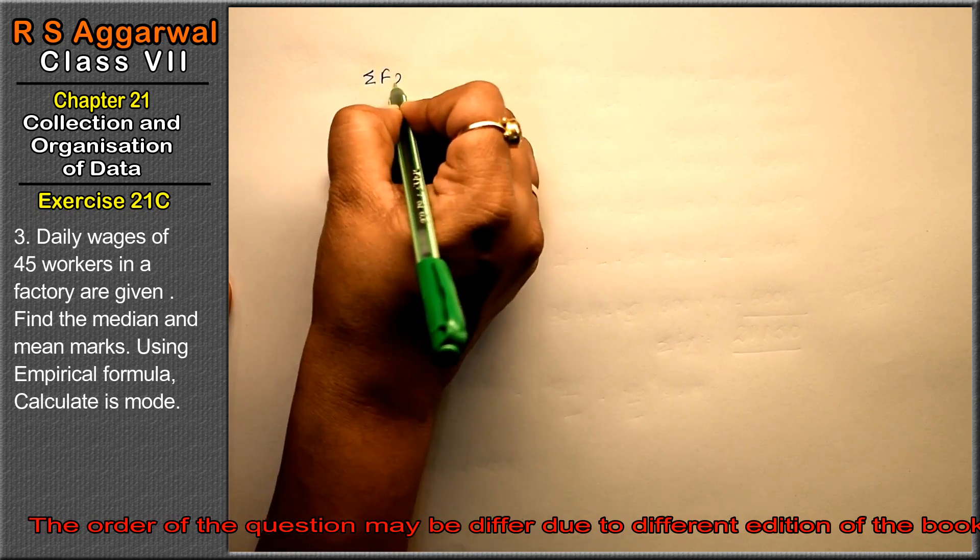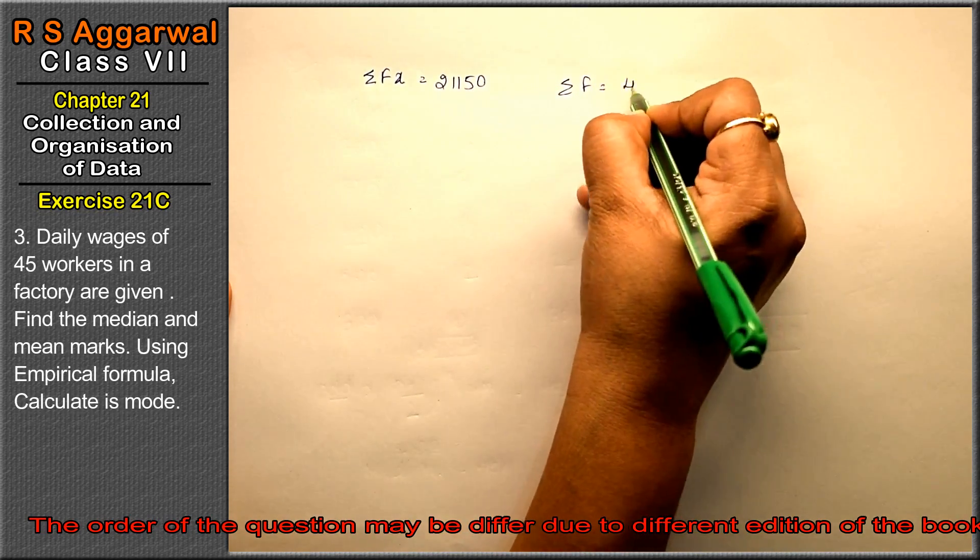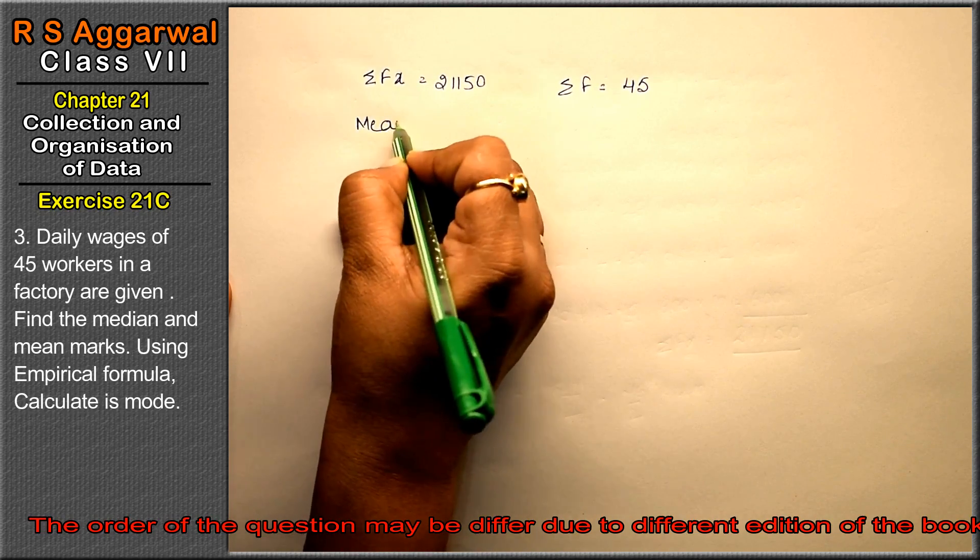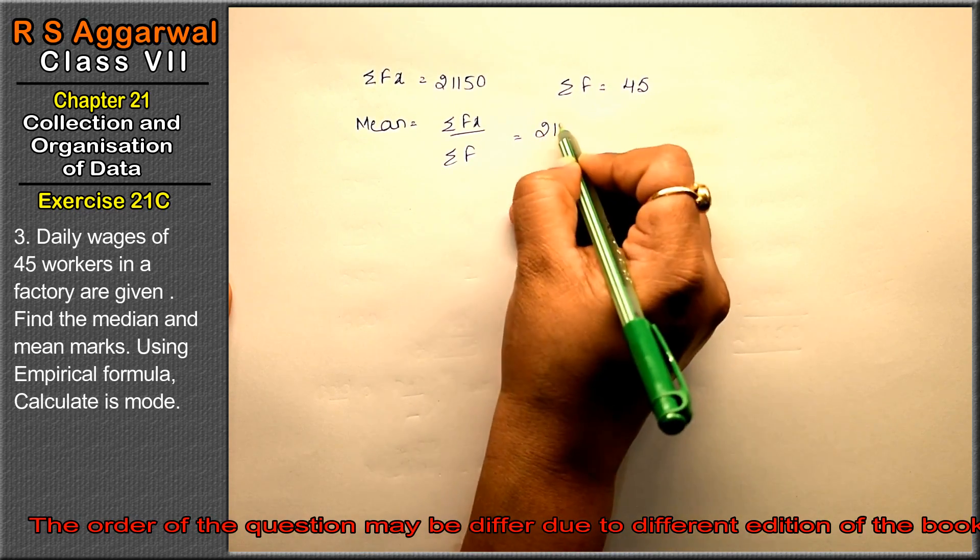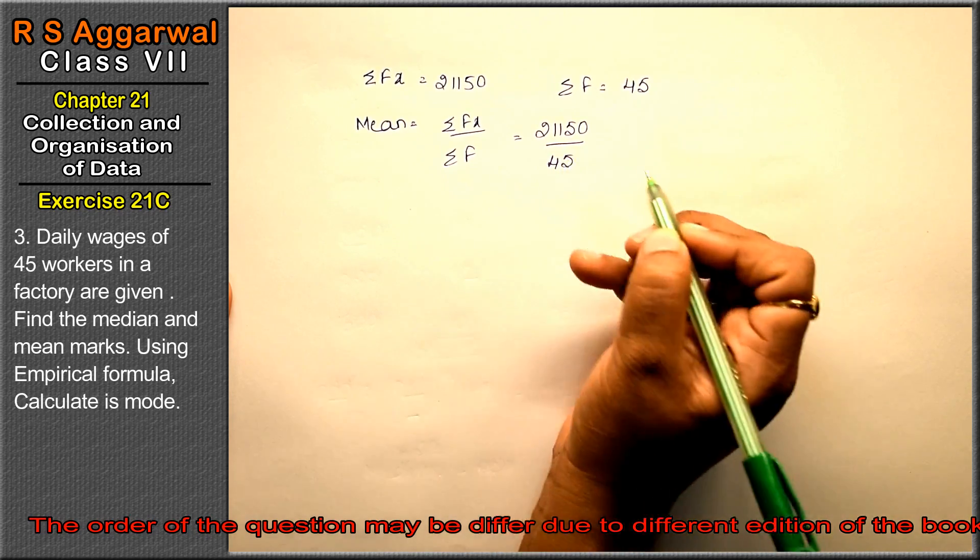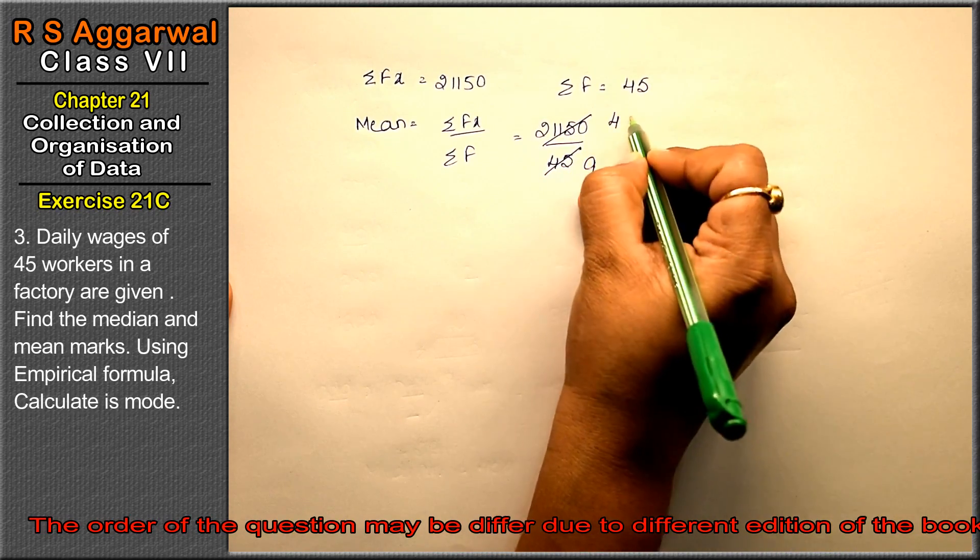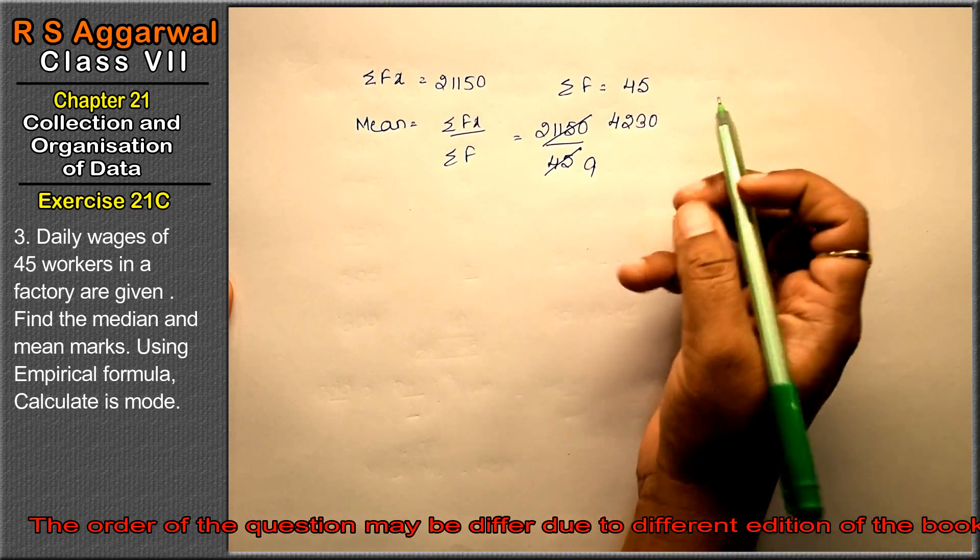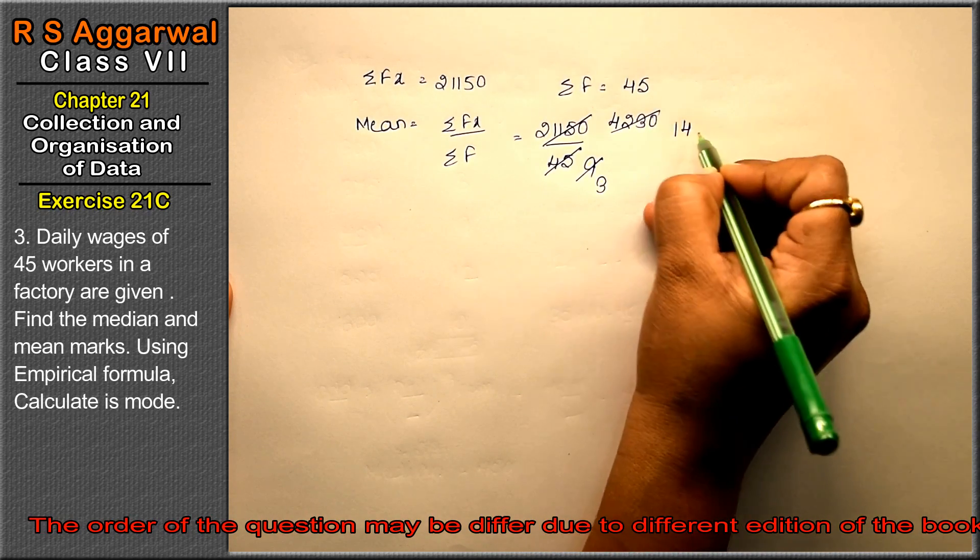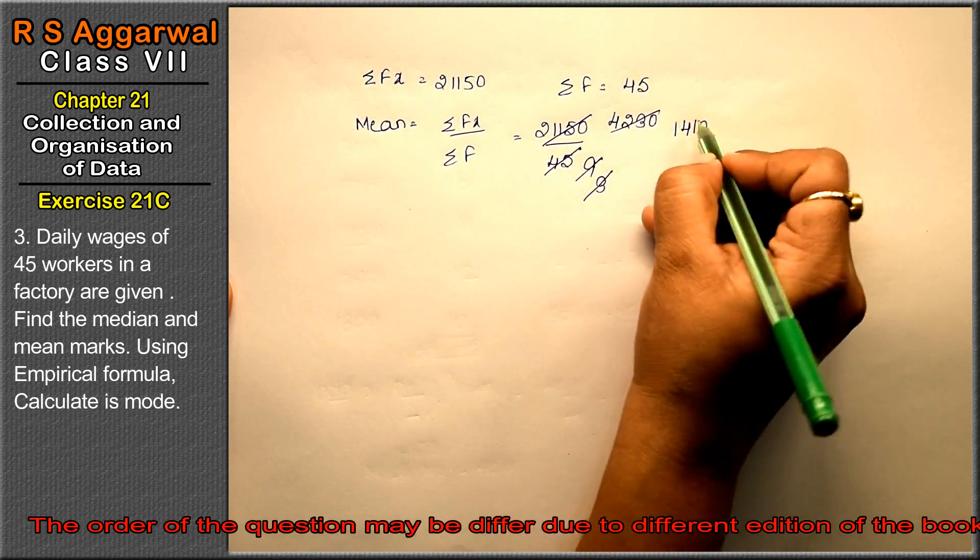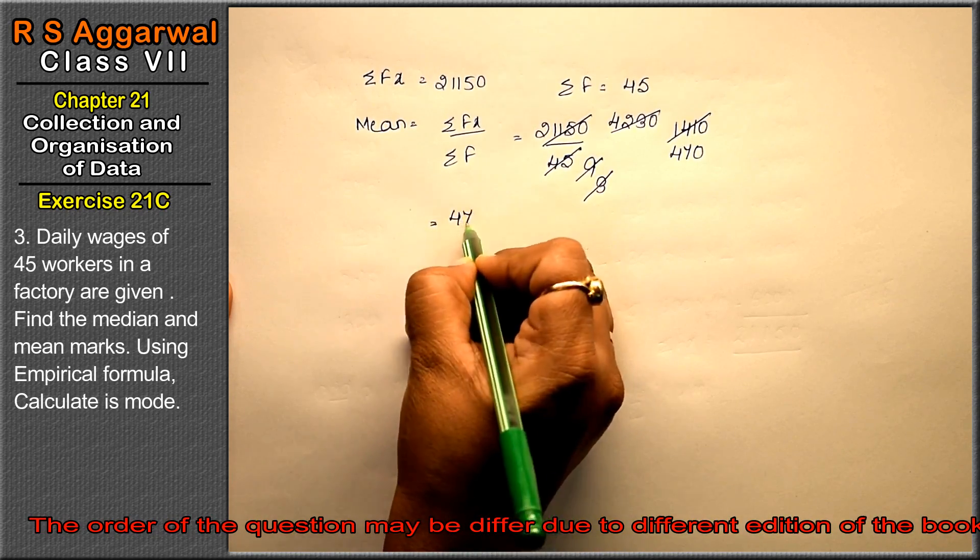Now our sigma fx is 21,150 and sigma f is 45. Mean equals sigma fx upon sigma f, that means 21,150 upon 45. So how much is it? 5 ones are 5, 5 nines are 45, 5 fours are 20, 5 twos are 10, 5 threes are 15 and 0. Now 3 threes are 9, 3 ones are 3, 3 fours are 12, 3 ones are 3 and 0. Again 3 threes are 9, 3 fours are 12, 21, 3 sevens are 21 and 0. So mean is 470.